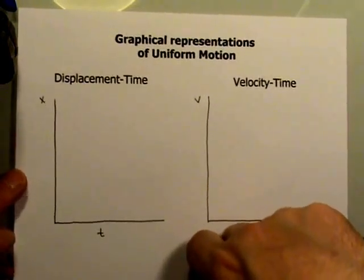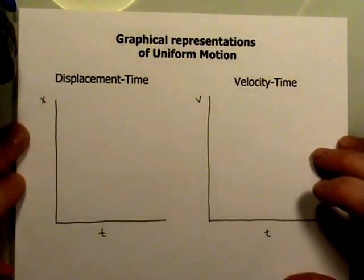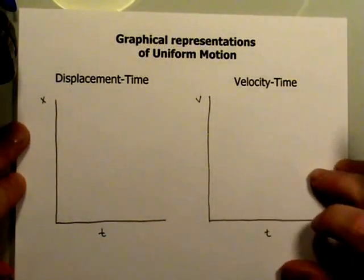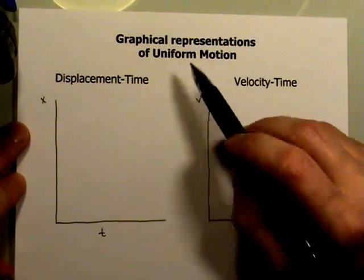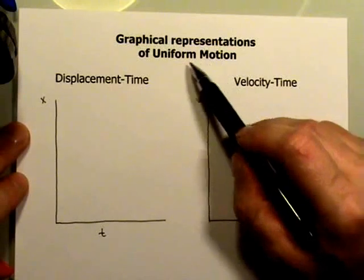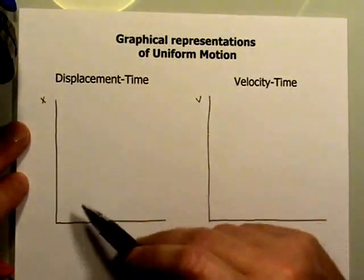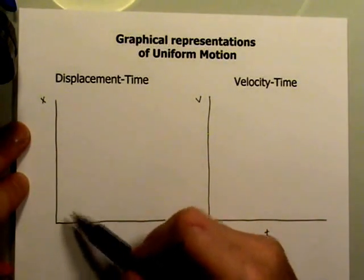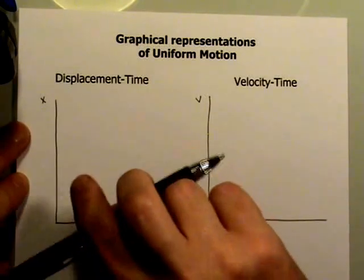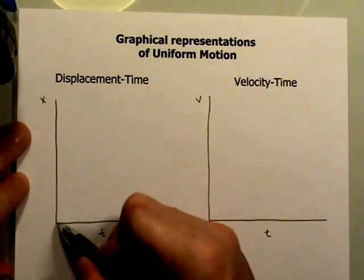X always represents the displacement or position of the object at some given time. For uniform motion, this graph is going to produce a straight line — at no point will the line go steeper or shallower or flatten out or go vertical. It will stay nice and straight.